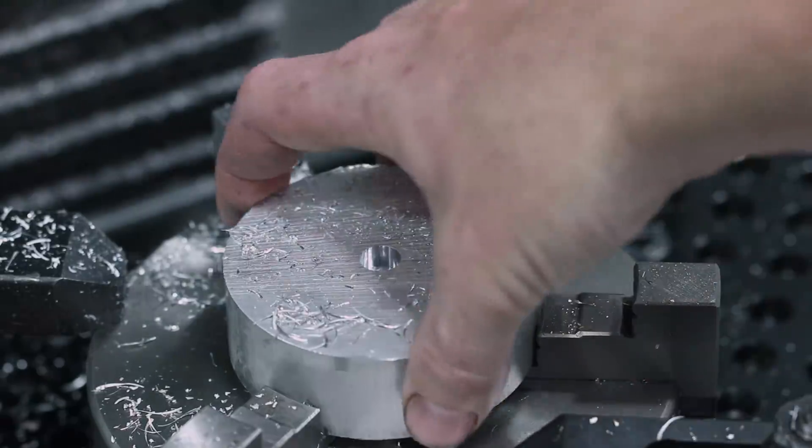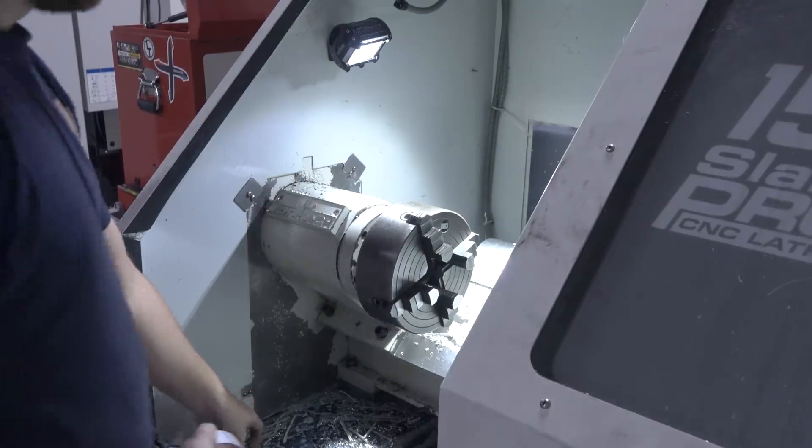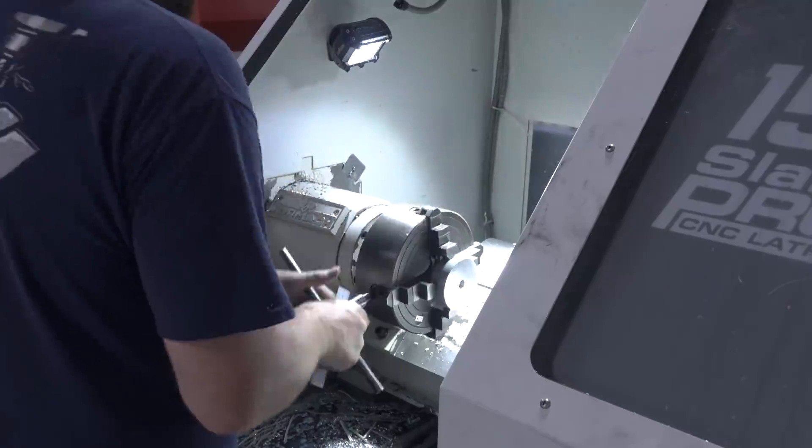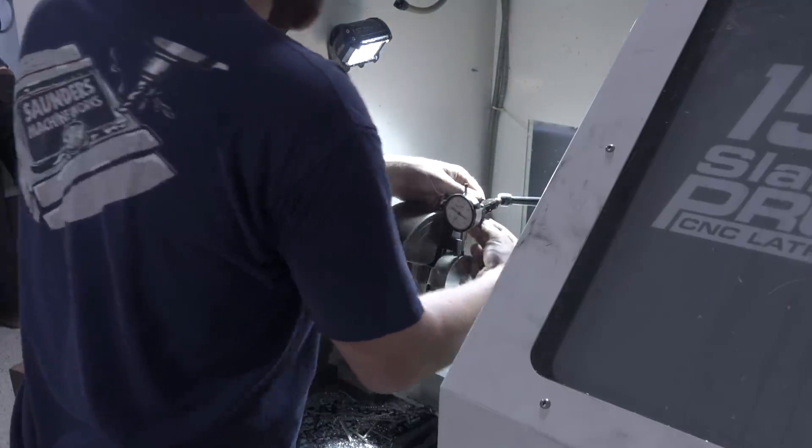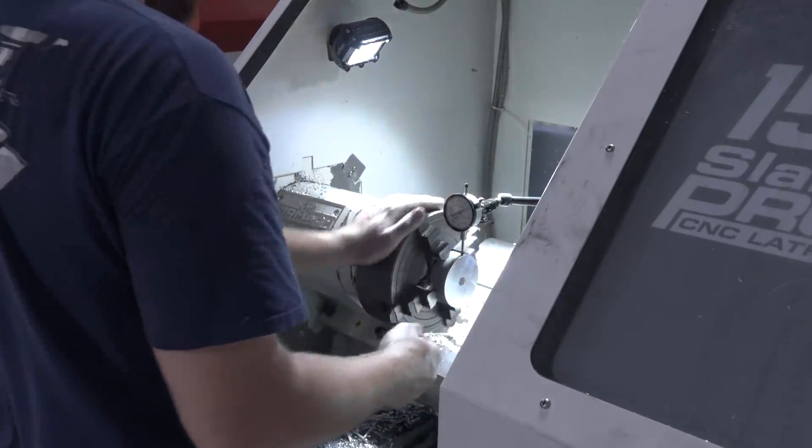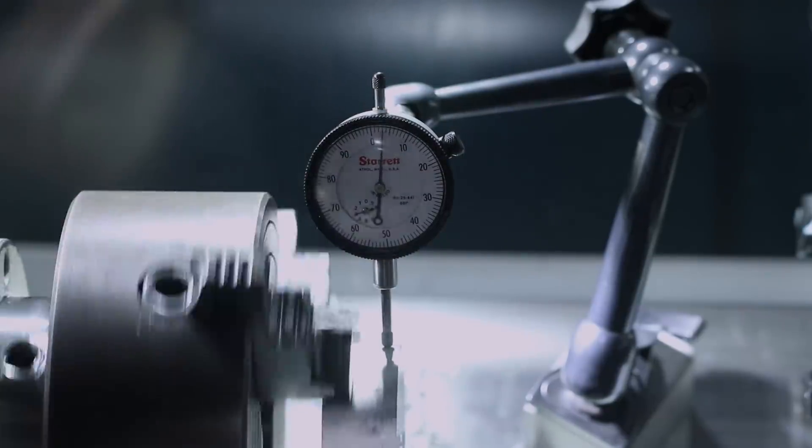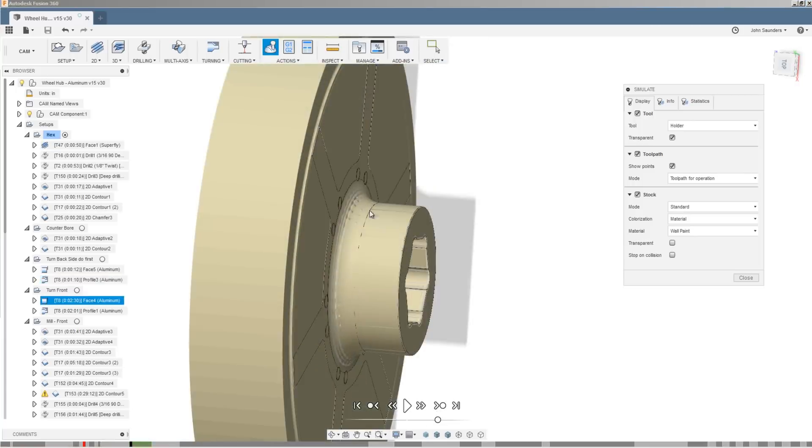Over to the Slant Pro four-jaw chuck. That's going to let us dial in this piece of material. With it chucked up, we're going to turn the back side. So it's a combination of facing off that backside, but then really roughing out that material as well as putting that final turned radius on the inside of the hubs.